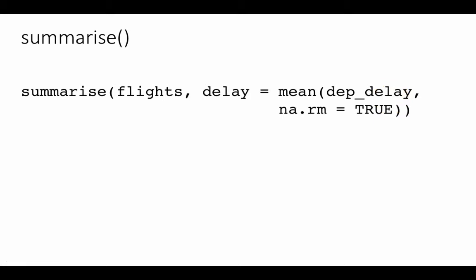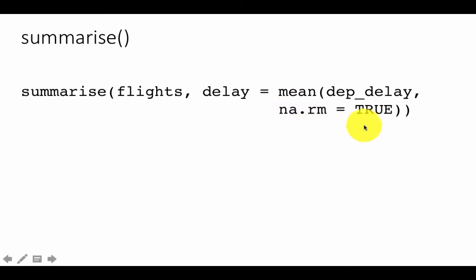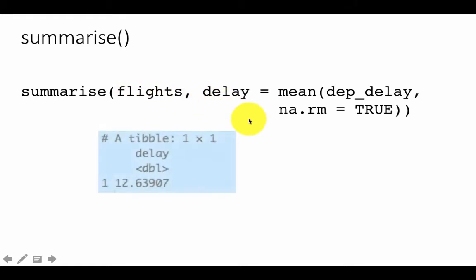We also set na.rm equals TRUE, which is important when computing things like mean or standard deviation. If you have any NA values — any missing values — the mean will come out as NA. So you want to tell the system to ignore all NAs when computing the mean. If you don't include this, the result will be NA because there are some NAs in the departure delay column. The result here is just one single value: 12.63, which is the average of all departure delays in the file.